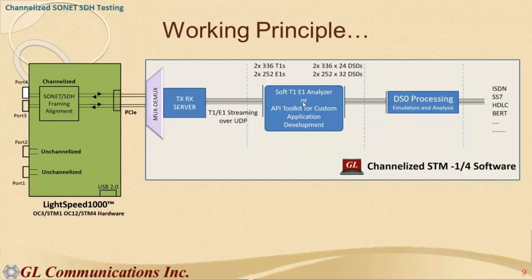The MUX-DMUX and TXRX applications exchange T1/E1 channel traffic over a UDP link with the API toolkit or soft T1E1 analyzer. The application multiplexes T1/E1s into STM1 or STM4 for transmission over the LS1000 board, and in reverse, receives STM1 or STM4 frames, demultiplexes to access individual T1/E1s, and transfers them to the T1E1 analyzer or custom application — including processing down to DS0 level.